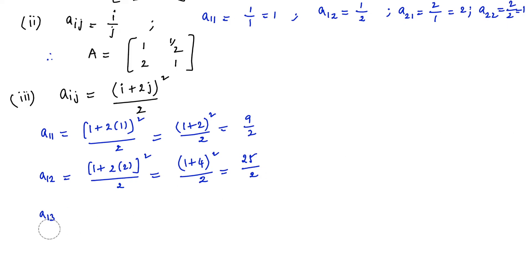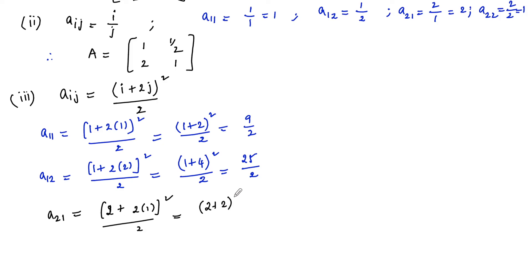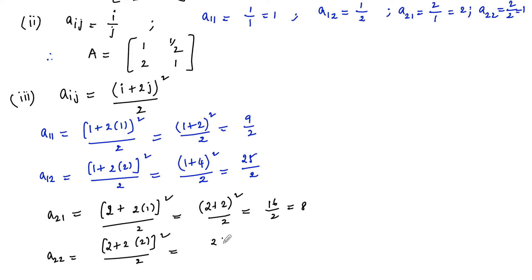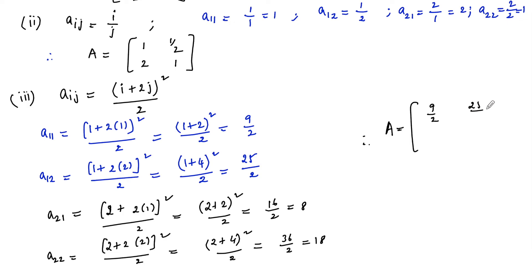Next, A21 is equal to (2 plus 2 times 1) whole square by 2, which is (2 plus 2) whole square by 2, that is 6 squared = 36 by 2, which is 18. Therefore the matrix A is equal to [9/2, 25/2; 18, ...] — specifically 9 by 2, 25 by 2, 8 and 18. So this is the matrix.